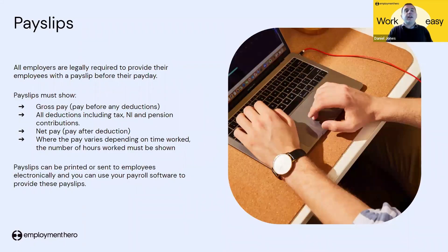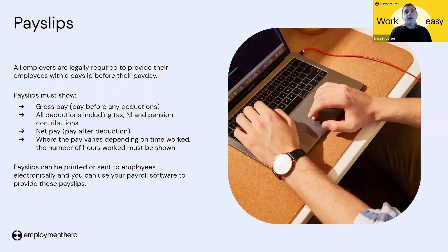One of the important parts of running a payroll is to provide your employees with a payslip at the end of each pay run. The payslip must show the gross pay before any deductions are made, all deductions including tax and national insurance contributions, net pay, and whether there has been variance in hours. For example, if you have a salaried worker who works overtime or an employee paid variable hours, you need to show the number of hours to comply with working time directives. Payslips can be printed or sent to the employee electronically, and you can use your payroll software to produce these.